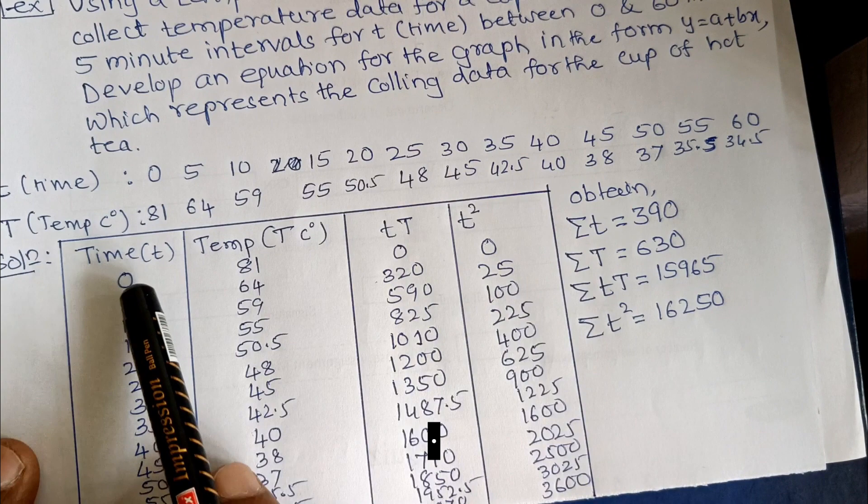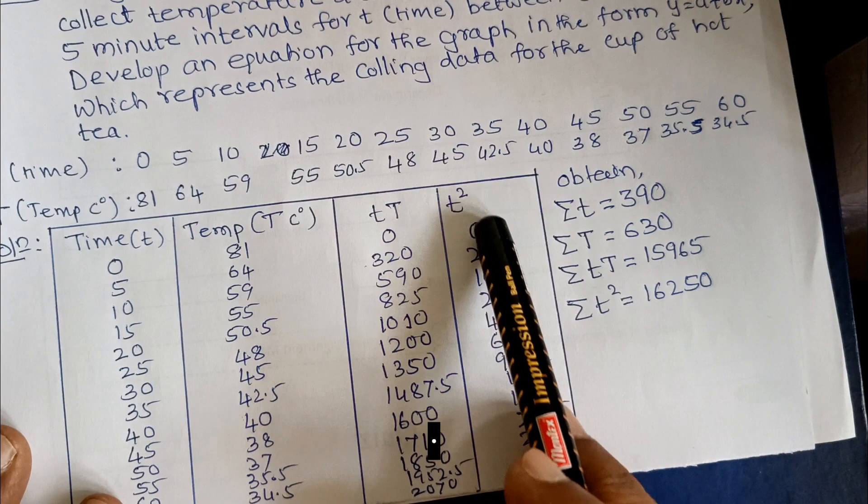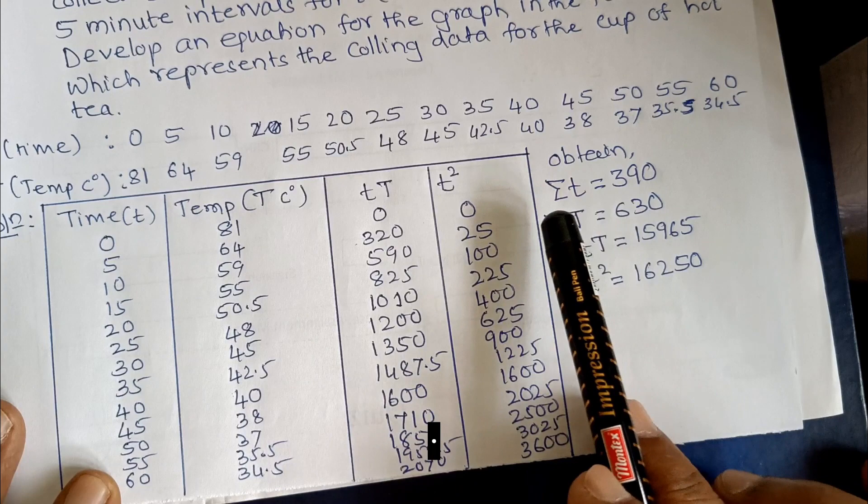And the fourth column is T square: 0 into 0 gives 0, 5 into 5 is 25. Like that you can obtain the T square column also.